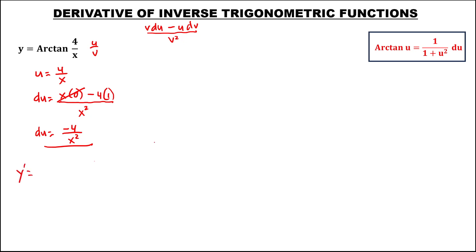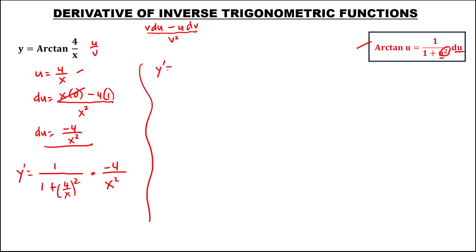So to find the derivative for inverse tangent, this is 1 over 1 plus u to the power 2, and u is 4 over x, quantity to the power 2, times du, and du is negative 4 over x to the power 2. Then to simplify, y prime equals 1 over 1 plus — 4 to the power 2 is 16 — over x to the power 2, then times negative 4 over x to the power 2.